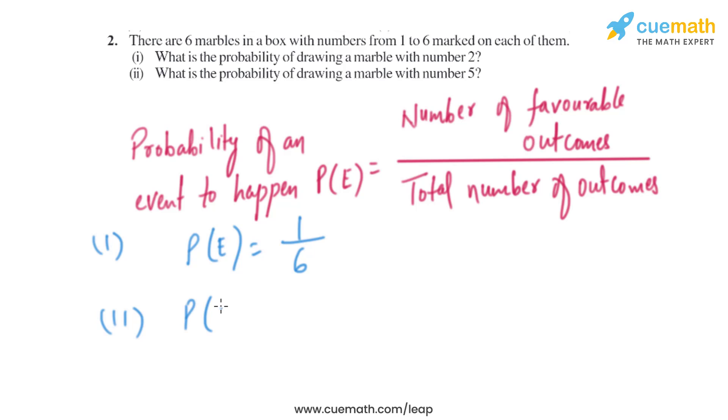Now let's have a look into the second part. The probability of drawing a marble with number 5: the number of favorable outcomes is basically 1, because there is one number that is 5, divided by the total number of outcomes. The total number of outcomes are basically 6, as there are 6 numbers.